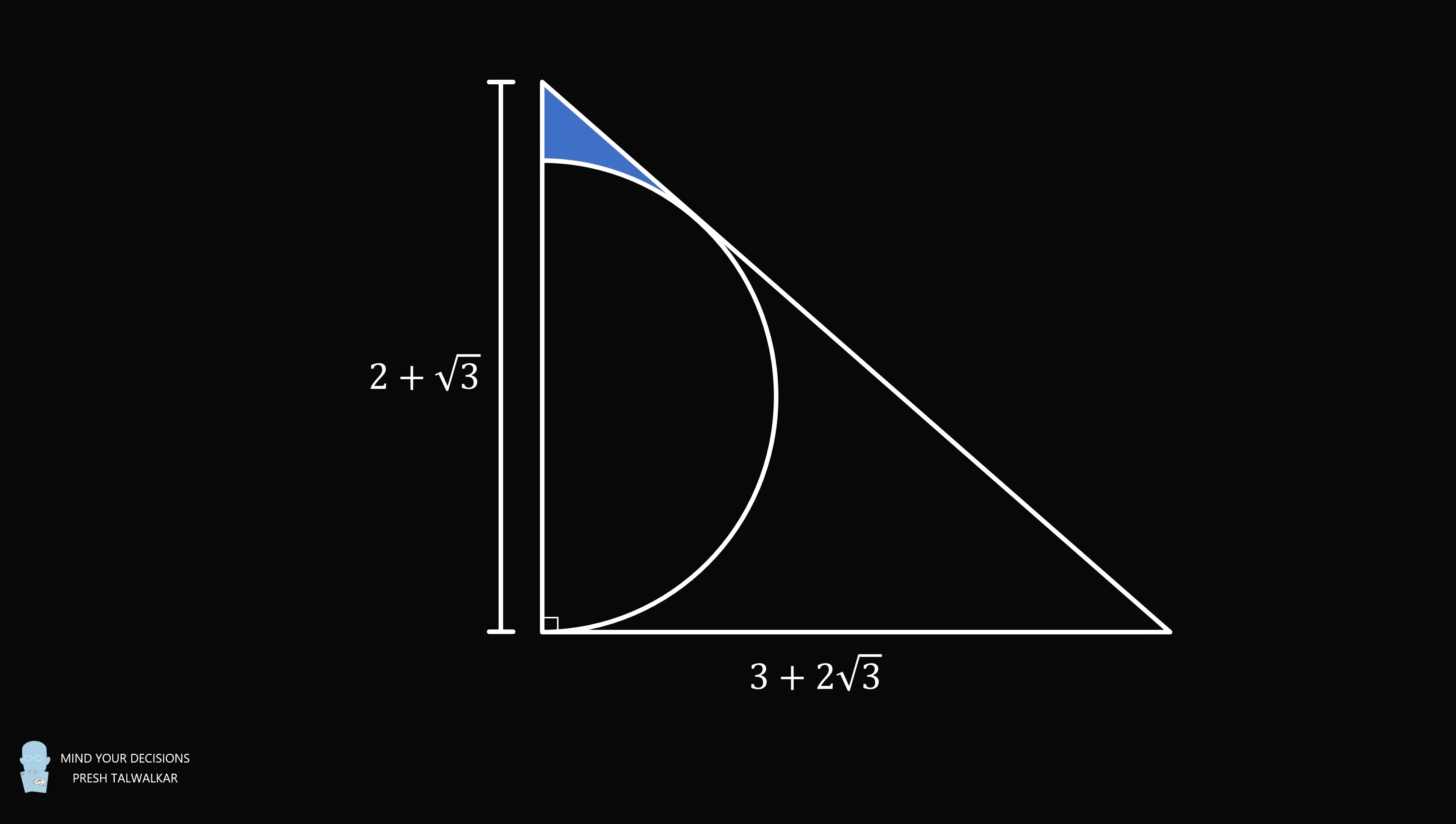Now consider the region that's bounded between the shorter leg, the hypotenuse, and the semicircle. The question is, what is the area of this region? I thank Sanjeev for the suggestion. Pause the video if you'd like to give this problem a try, and when you're ready, keep watching to learn how to solve this problem.